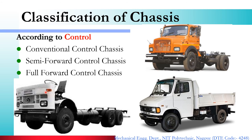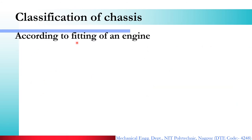So if ever an exam question comes — classify chassis on the basis of control — you have to give these three types. Chassis can also be classified according to the fitting of the engine. In the previous video lectures, we already saw this according to vehicle layout, also called chassis layout, where we considered both engine and drive to classify — front engine rear wheel drive, front engine front wheel drive, rear engine rear wheel drive, and four wheel drive.